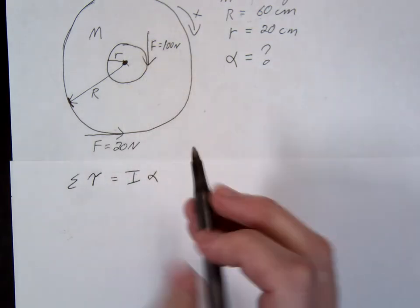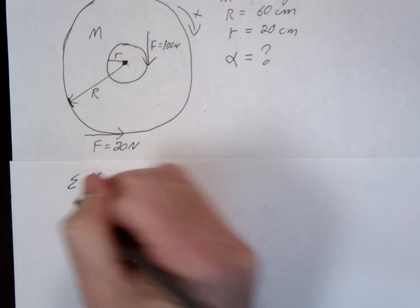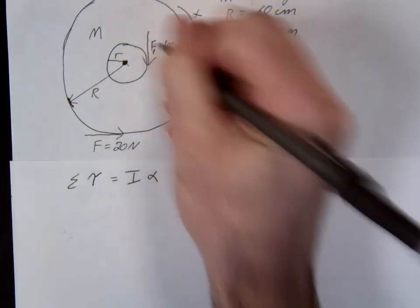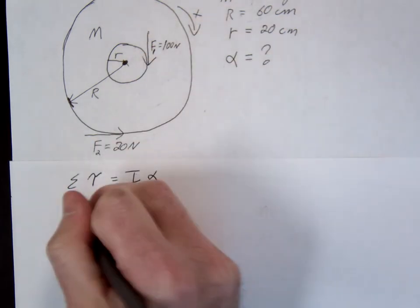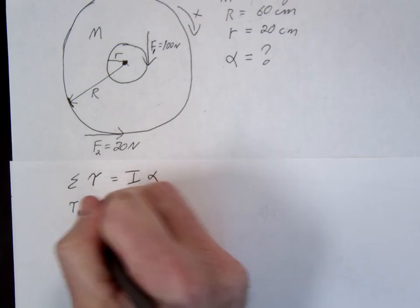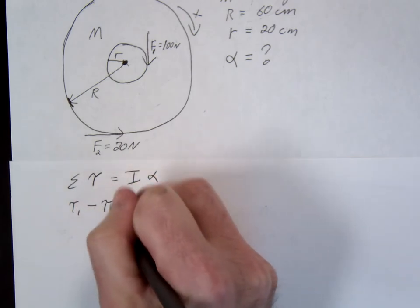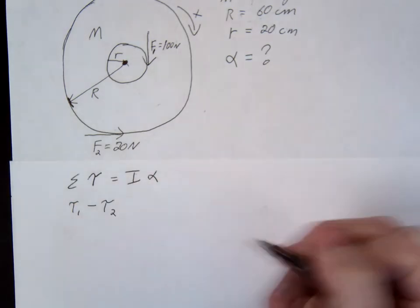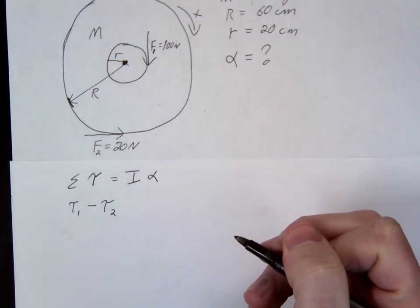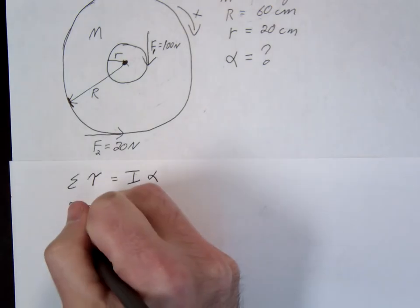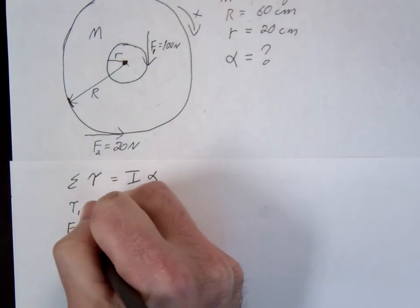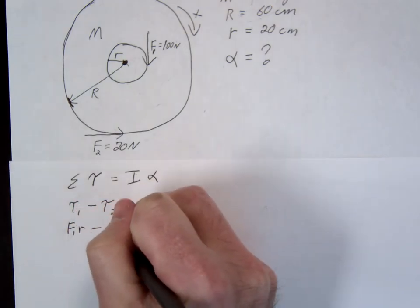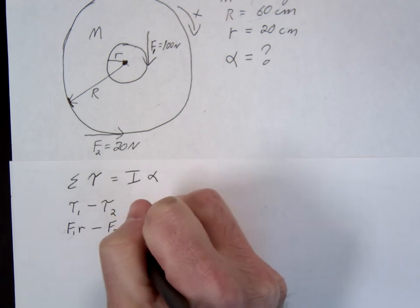This is providing a torque. We'll call these F1 and F2. There's a torque from F1 minus the torque from F2. How do we find torque? F times R. So this would be F1 times little r minus F2 times big R.